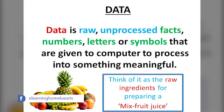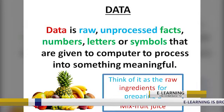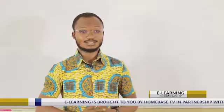What is data? Data is raw, unprocessed facts, numbers, letters or symbols that are given to a computer to process into something meaningful. You can think of data as the ingredient used for preparing something like mixed fruit juice. If you want to prepare a mixed fruit juice, you first get your raw fruits — a variety of fruits. Those variety of fruits can be termed as data because they have not been processed.